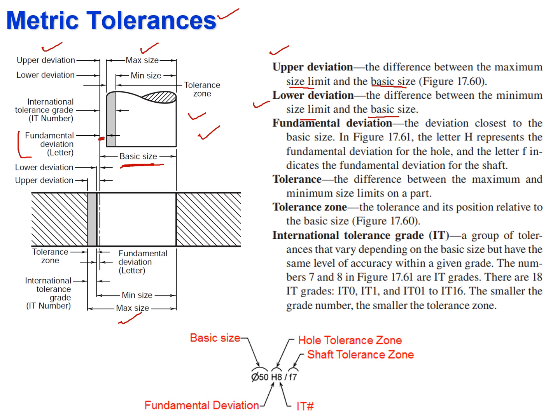The fundamental deviation is the deviation closest to the basic size by the most amount. The letter H represents the fundamental deviation for the hole, so H is used for hole deviation. The letter F indicates the fundamental deviation for the shaft in this figure. H is always used for a hole; for a shaft, the alphabet can change. So letter F is used for the shaft tolerance zone, and H is used for the hole tolerance zone.